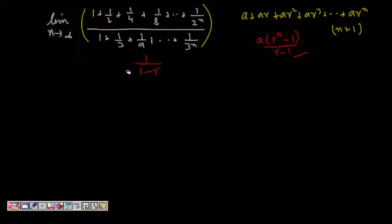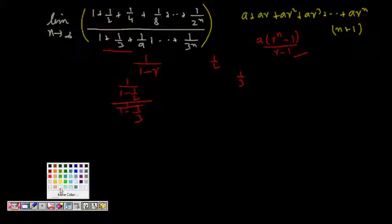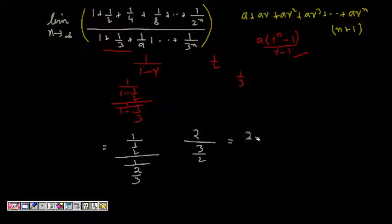Here, for the first series, r = 1/2 and a = 1, so as n tends to infinity it becomes 1/(1 - 1/2) = 1/(1/2) = 2. The second series has r = 1/3, giving 1/(1 - 1/3) = 1/(2/3) = 3/2. So the product is 2 × 3/2 = 4/3.